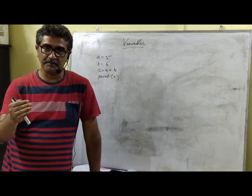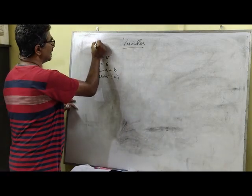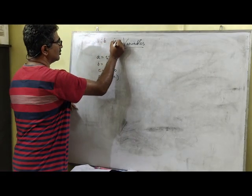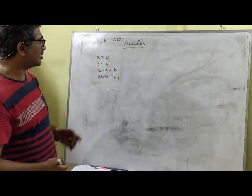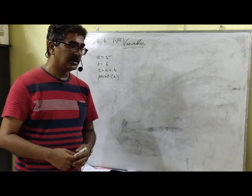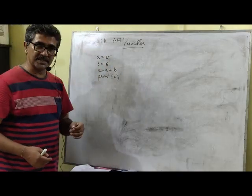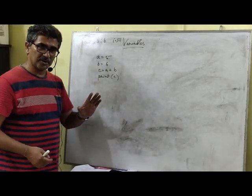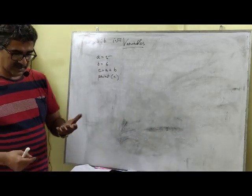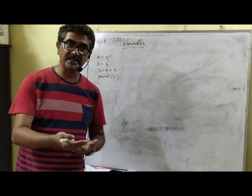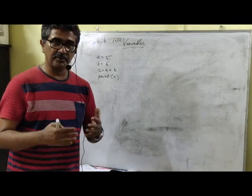And the third category is complex numbers, in this particular form A plus IB, where I is root over minus 1. I believe you will be studying or you had already studied complex number in mathematics. If you haven't studied, you will definitely study and then we can start writing programs related to complex numbers. Currently what we are going to do is we are only going to work with variables that store numbers, either integer or floating point number. This is what we are going to deal with currently.